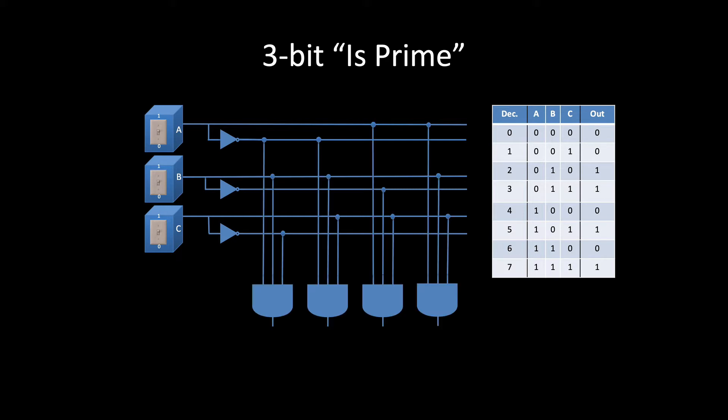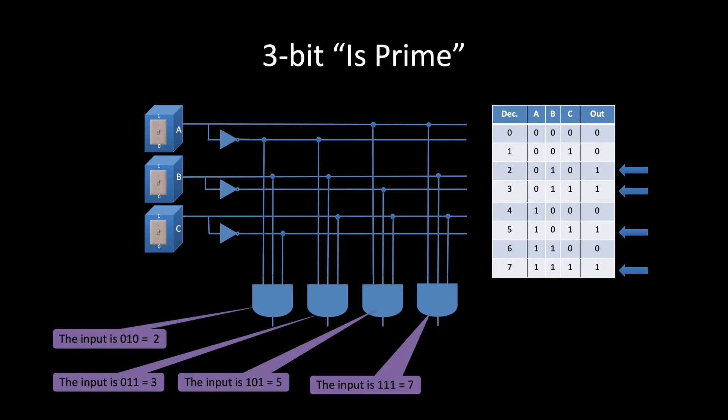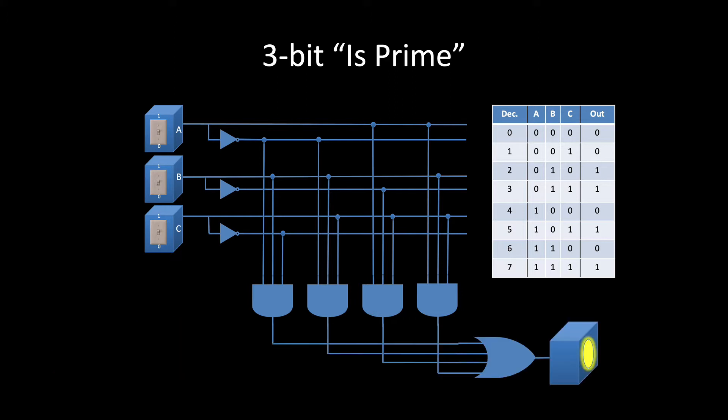The next step was to add a set of AND gates. Each AND gate looks for one of the inputs that should produce a 1 as output. And then finally, these AND gates are connected to a single OR gate, which returns a 1 if any of the AND gates produces a 1.